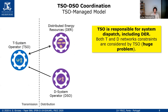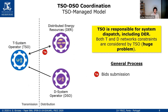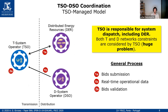Starting with the first model — the TSO Managed Model. The TSO is responsible for the system dispatch, including the DER, so both transmission and distribution network constraints are considered by the TSO. This is a large problem. The process starts with the DER submitting bids to the TSO. The DSO also sends real-time operational data to the TSO, so the TSO has the information to perform bid validation and dispatch, then sends the dispatch command to the DER.